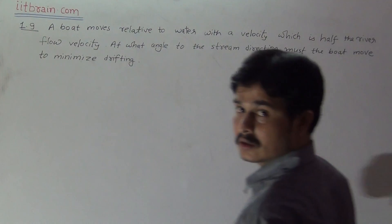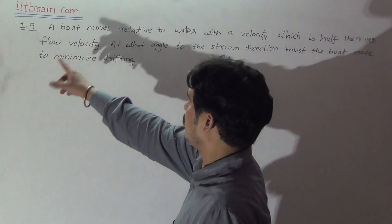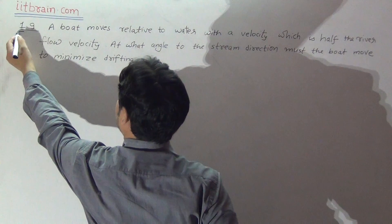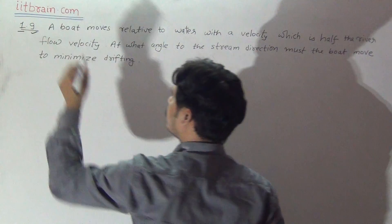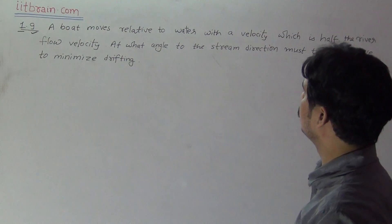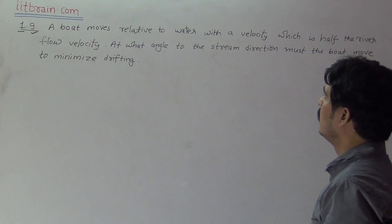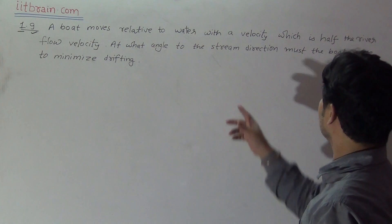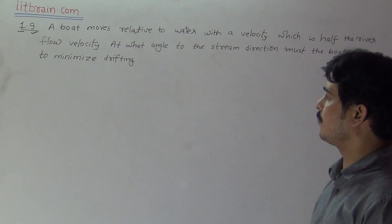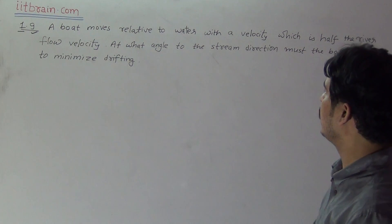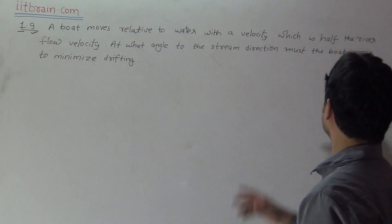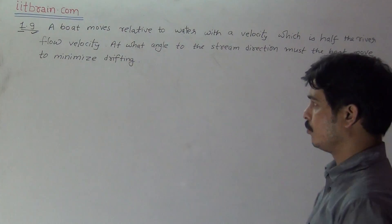Hello students, this is problem 1.9 — first exercise, chapter 1, ninth problem. The question is: a boat moves relative to water with a velocity which is half the river flow velocity. At what angle to the stream direction must the boat move to minimize drifting?